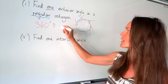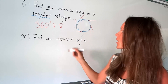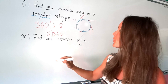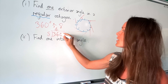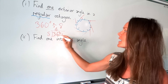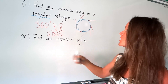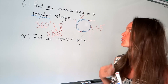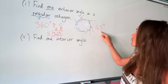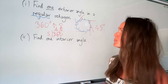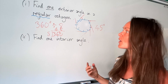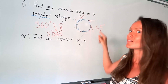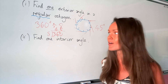So if we need to find one of those exterior angles, just like before, we need to divide 360 by however many there are. And this time, because it's an octagon — which is an eight-sided shape — there will be eight exterior angles, so we need to divide 360 by eight. Eight into 36 goes four times with a remainder of four, and eight into 40 goes five. So one exterior angle in a regular octagon is 45 degrees.